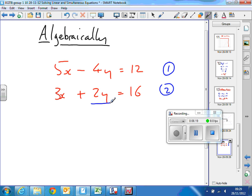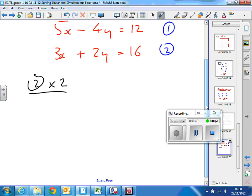The shorthand way to do this is equation 2 multiplied by 2. I'm going to take the second equation and multiply it by 2. Every term on both sides must be multiplied by 2. So 6x plus 4y equals 32.